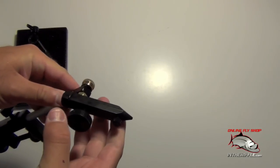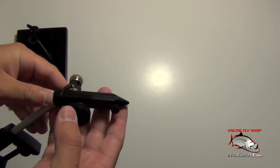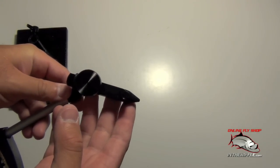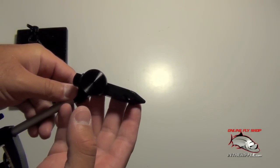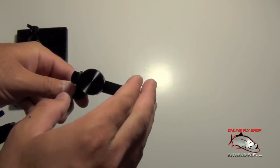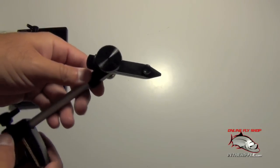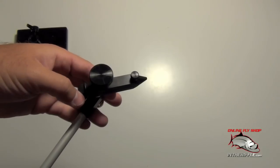The reason it's a step up is the jaws on this vise are very fine. It can handle hooks all the way down into the 20s, whereas your kit vise has those big rounded jaws. It's good for larger flies, not very good at all for small flies.